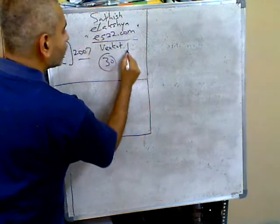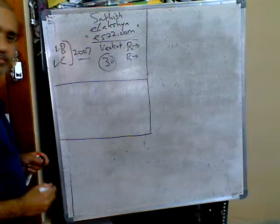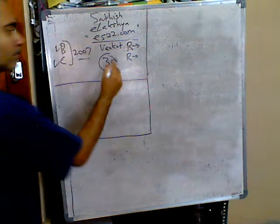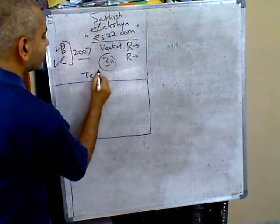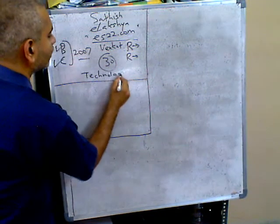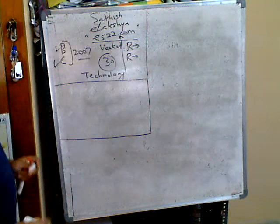We do two businesses: recruitment for the financial industry and retailing of financial products. All the businesses that we do, we use technology. The be all and end all comes through our website es22.com.